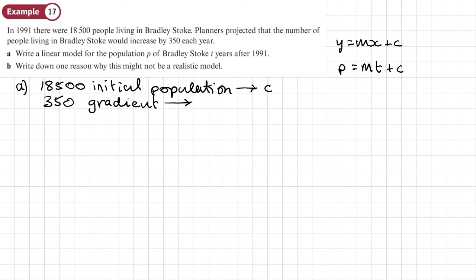And that gradient, that's where we put M. So we can write our final answer as P equals 350T. So that shows the 350 increase per year. As T goes up by 1, the population will go up by 350 plus the initial population of 18,500.